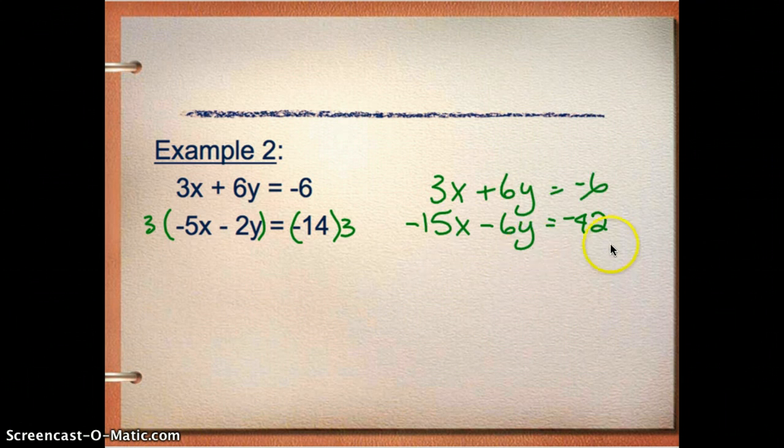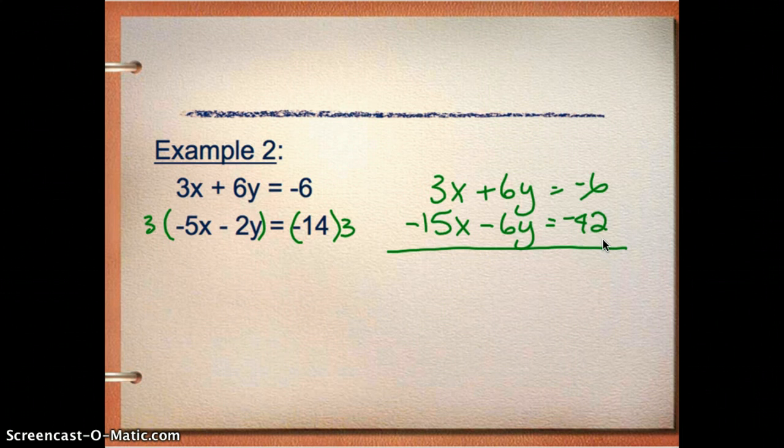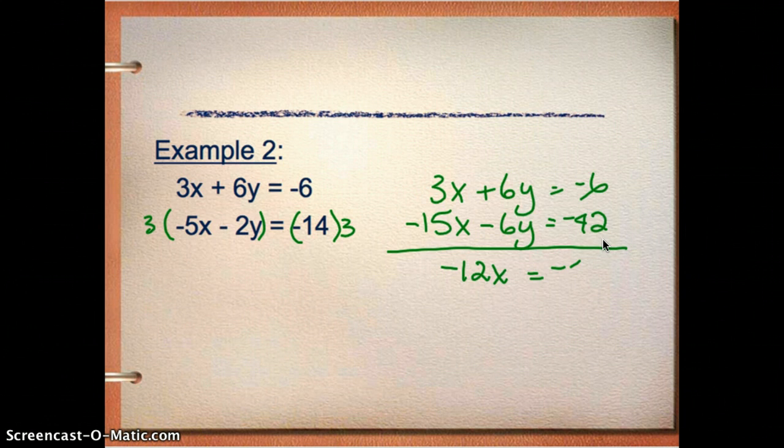So I have my pair of opposites right here. And I'm going to go ahead and add my equations. So 3x and negative 15x is negative 12x. My y's cancel out like I wanted them to. Negative 6 and negative 42 is negative 48. So then I'll divide both sides by negative 12. And I believe that x equals 4.